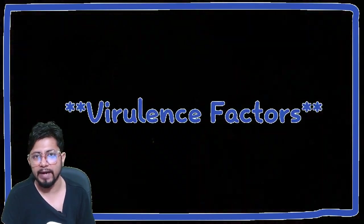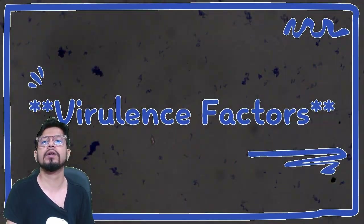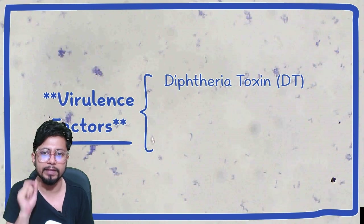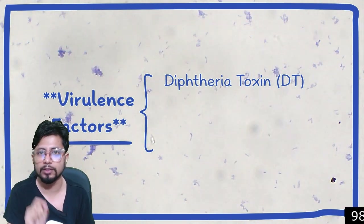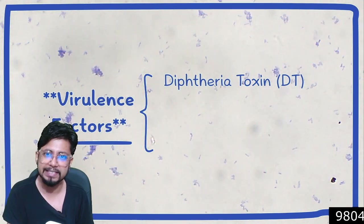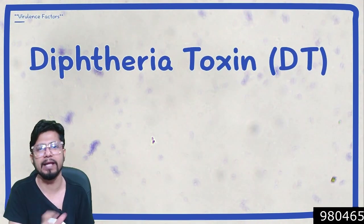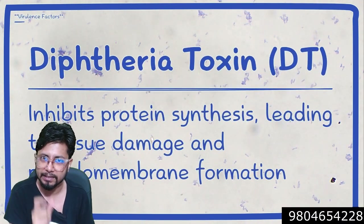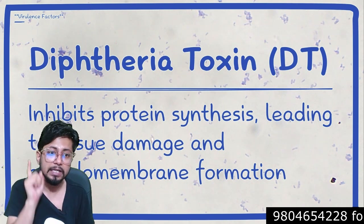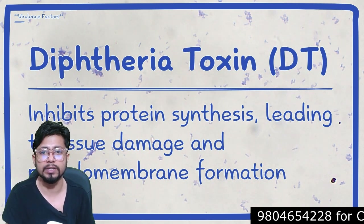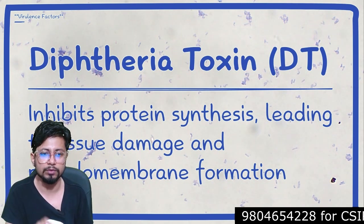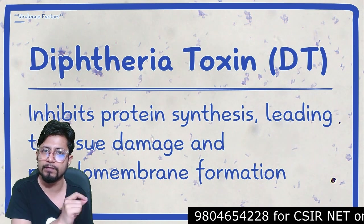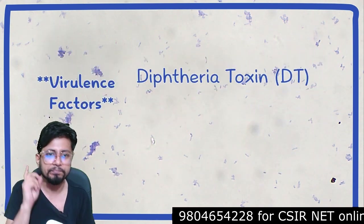The next topic is virulence factors of Corynebacterium diphtheriae. The diphtheria toxin, or DT, is the primary virulence factor, which inhibits protein synthesis, leading to tissue damage and pseudomembrane formation.